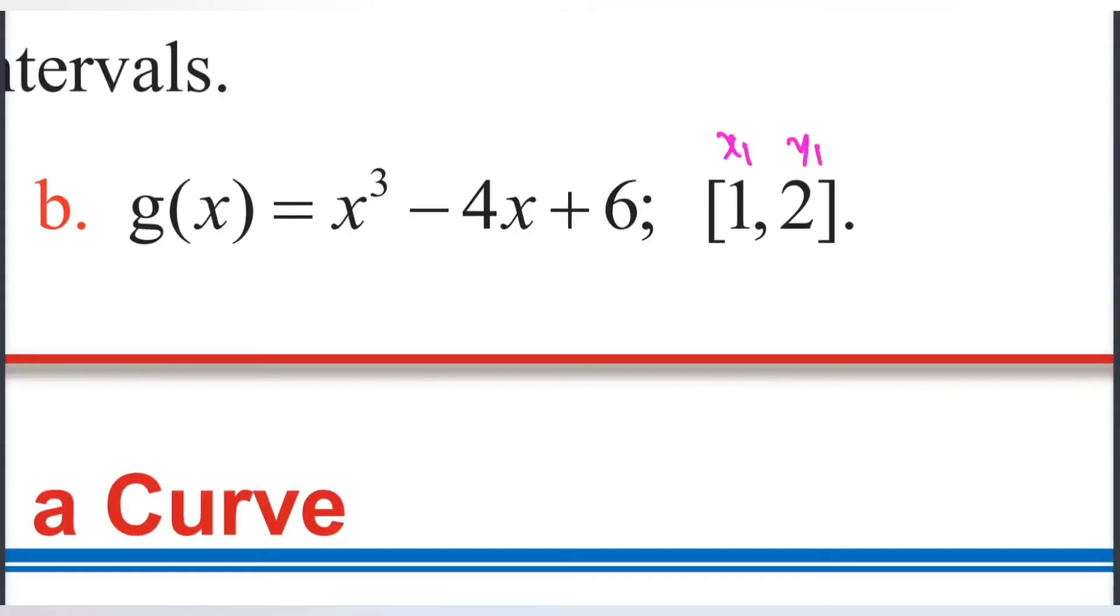For part b, x1, y1. x1 equals 1. Y1 equals 1 cubed minus 4 times 1 plus 6. 1 cubed minus 4 times 1, which is 4, plus 6. Negative 4 plus 6 equals 2, plus 1, y1 equals 3.